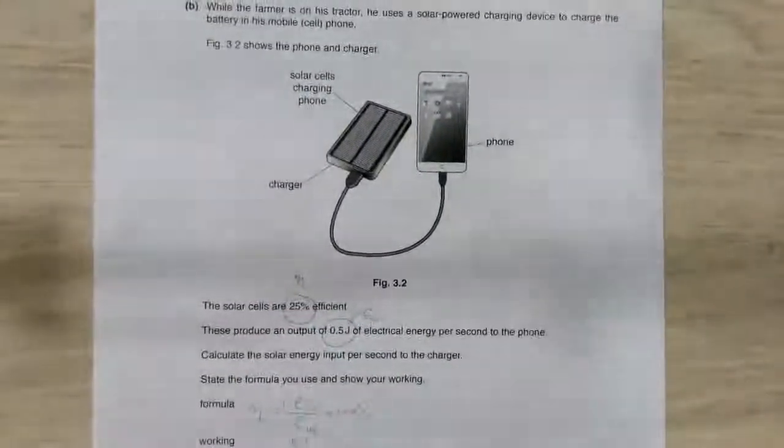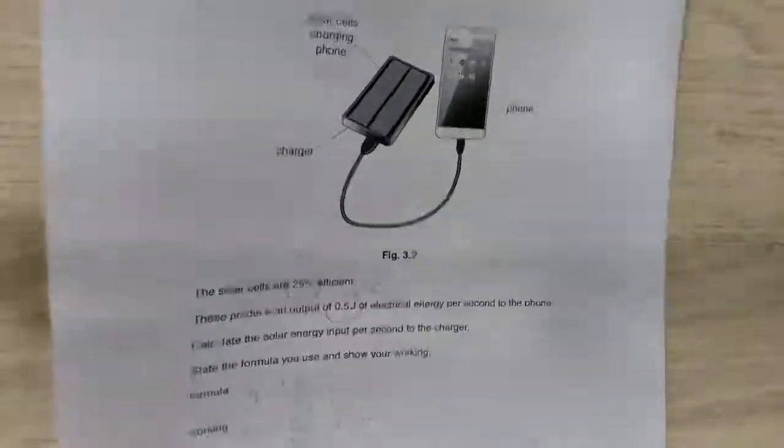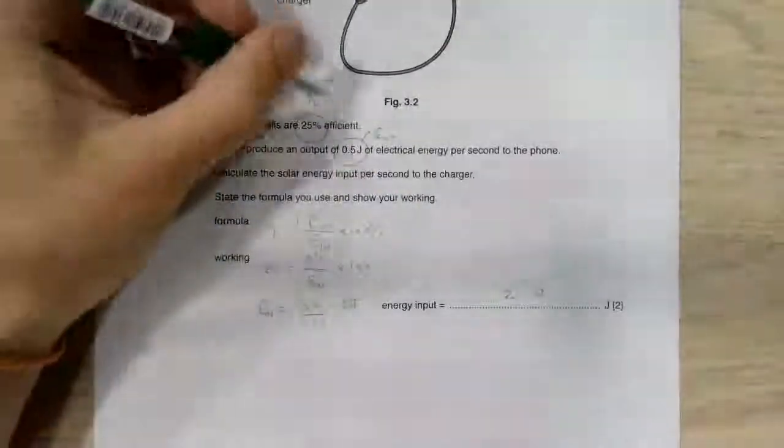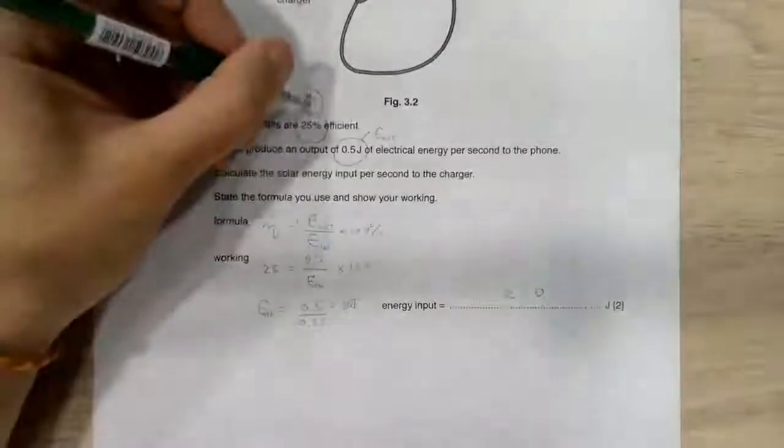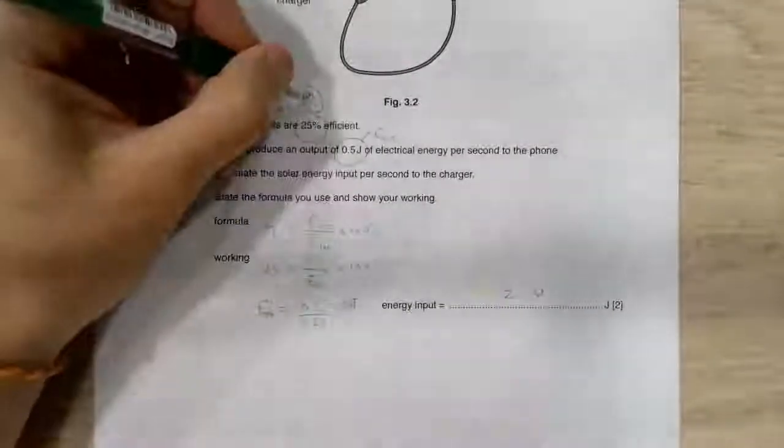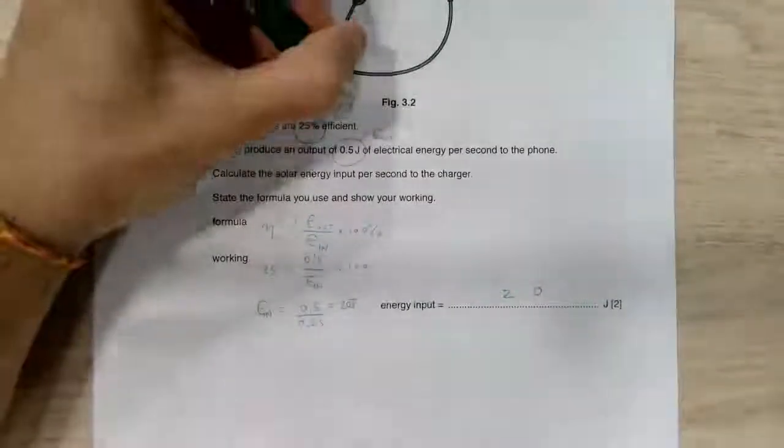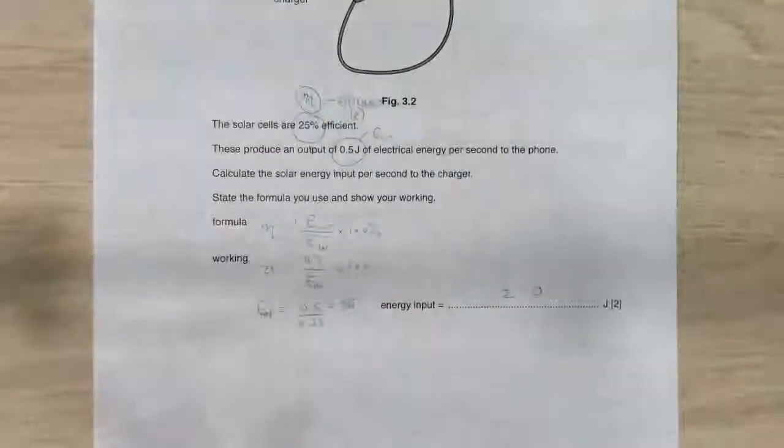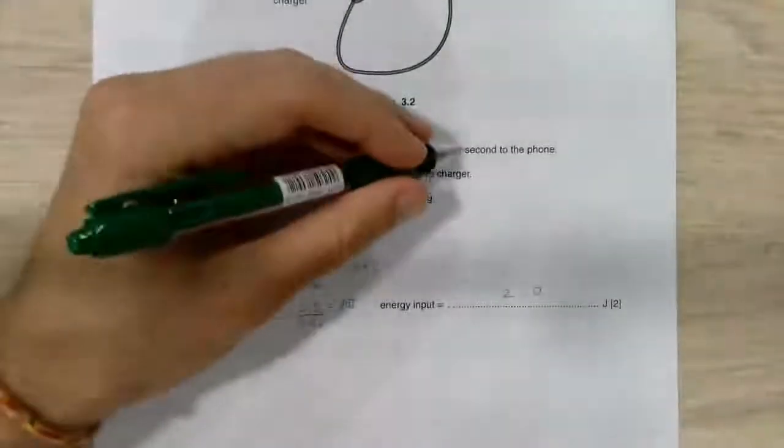The farmer's on the tractor. He uses a solar powered device to charge his battery. We are told that the solar cells are 25% efficient. Now, the symbol for efficiency is this nu. This Greek N. You can use whatever you want. You could simply just write efficiency or call it, some people call it small e. Whatever you want.